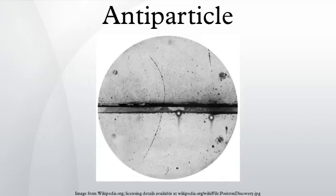In 1932, soon after the prediction of positrons by Paul Dirac, Carl D. Anderson found that cosmic ray collisions produced these particles in a cloud chamber — a particle detector in which moving electrons leave behind trails as they move through the gas. The electric charge-to-mass ratio of a particle can be measured by observing the radius of curling of its cloud chamber track in a magnetic field. Positrons, because of the direction that their paths curled, were at first mistaken for electrons traveling in the opposite direction.